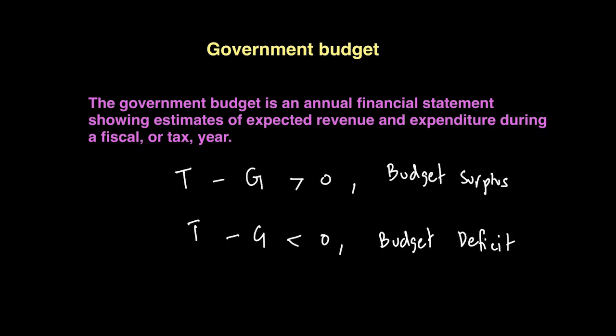When a budget surplus takes place, the government is spending less than it receives. On the other hand, when the government is spending more than it receives, it runs into a budget deficit.